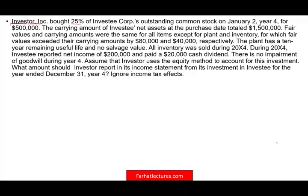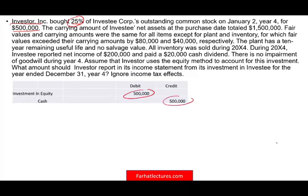Investor Inc. bought 25% of Investee Corp's outstanding stock on January 2nd of the year for $500,000. We purchased 25% of another company using the equity method. First entry: debit Investment in Equity $500,000, credit Cash $500,000. The carrying amount of the investee's net assets at purchase totaled $1.5 million — that's the book value. Fair value and carrying value were the same for all items except plant and inventory, for which fair value exceeded carrying amount by $80,000 and $40,000 respectively.